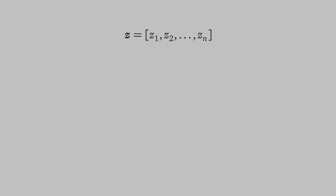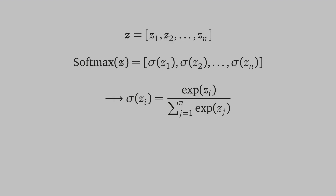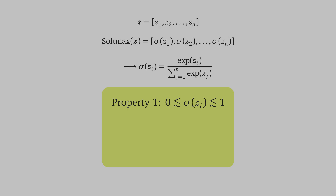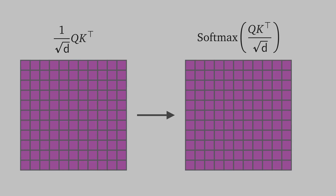As a recap: given vector z from z1 to zn, if we apply softmax we get an output vector sigma(z1) to sigma(zn), where each sigma(z_i) is computed as exp(z_i) divided by the sum over exp of all elements of vector z. Two important properties of the softmax output are: first, each output is between zero and one; second, the sum of all outputs is one. We apply softmax to each row of the scaled compatibility matrix, so the sum of each row will be one. This is our attention matrix.